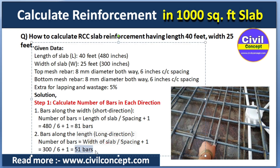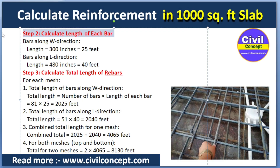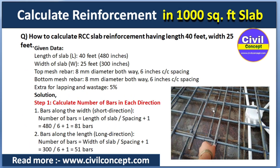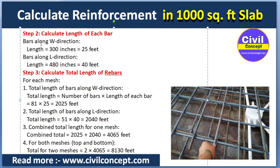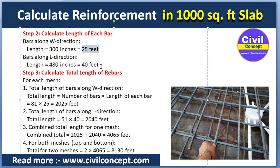We have now calculated the number of bars in each direction of the slab. Step 2: Calculate the length of each bar. Bars along the width direction have a length of 25 feet, and bars along the long direction have a length of 480 inches, which is 40 feet. Clear cover is not given in the data, so we are not subtracting it here. The total individual bar lengths are 25 feet and 40 feet.